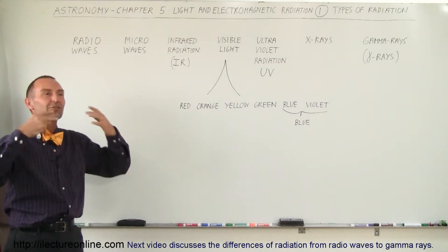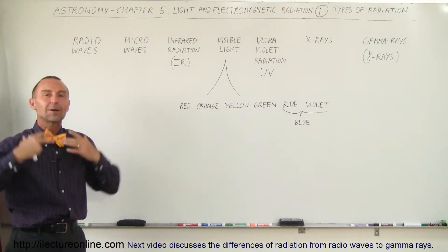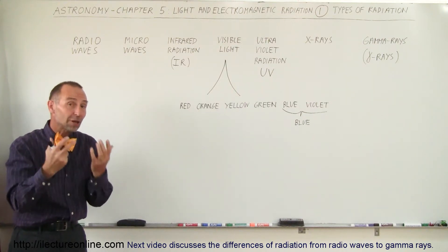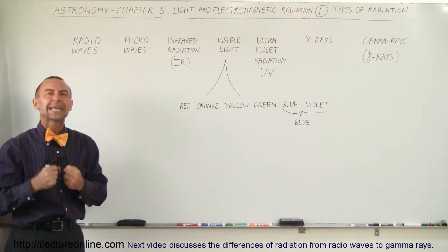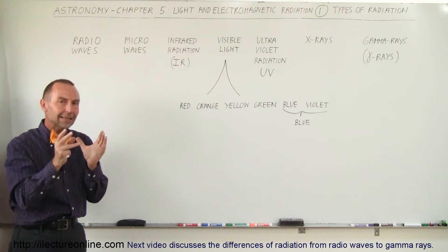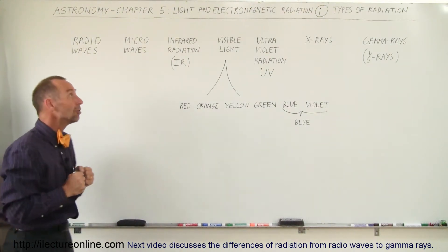So for us to study the universe, we have to study the information that comes to us, and the way that information comes to us is through electromagnetic radiation. And light is just one form of that electromagnetic radiation.